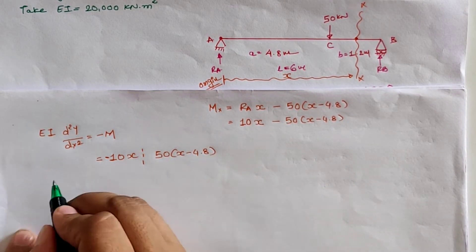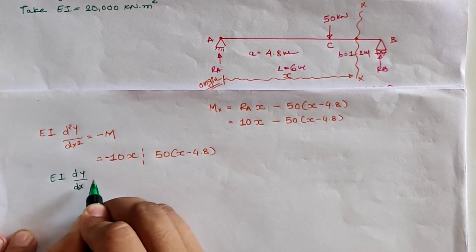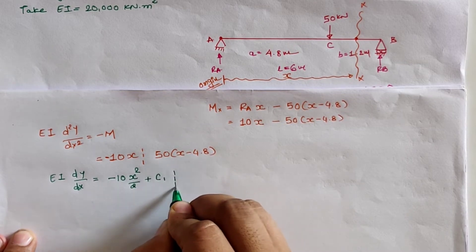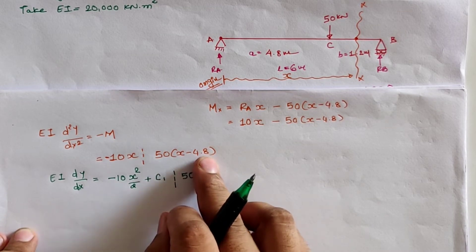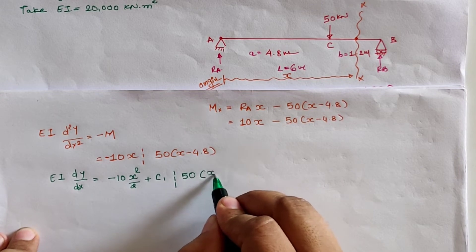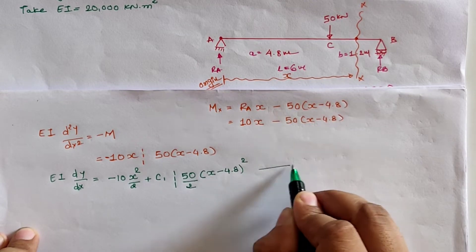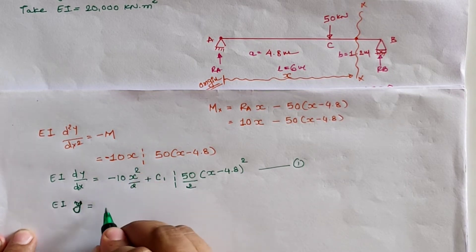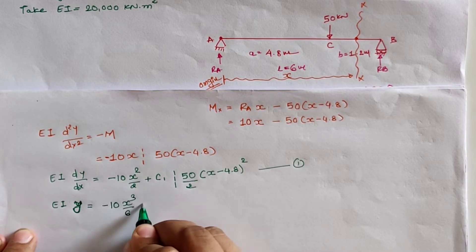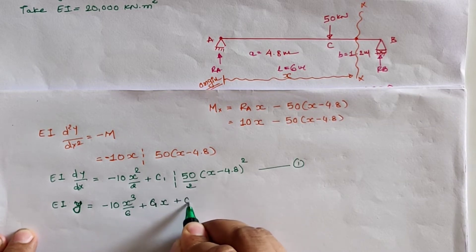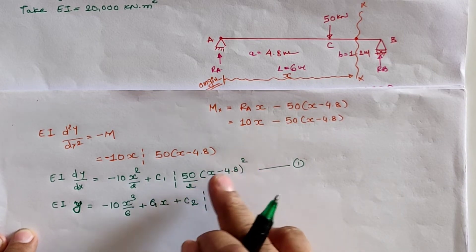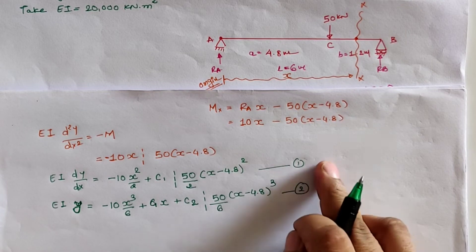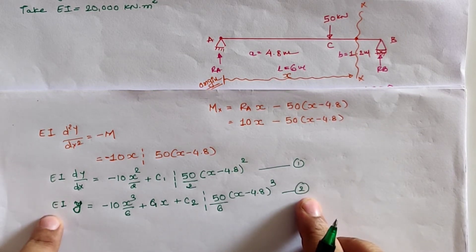Using the elastic curve equation EI·d²y/dx² = M_x, integrating once gives: EI·dy/dx = −10x²/2 + C1 − 50·(x − 4.8)²/2. Integrating again gives: EI·y = −10x³/6 + C1·x + C2 − 50·(x − 4.8)³/6. Equation one is for slope and equation two is for deflection, where C1 and C2 are integration constants to be found from boundary conditions.